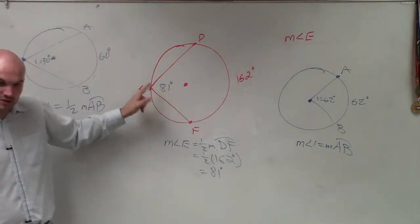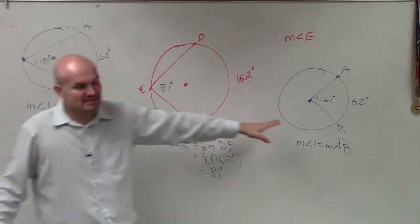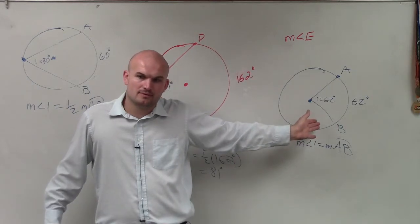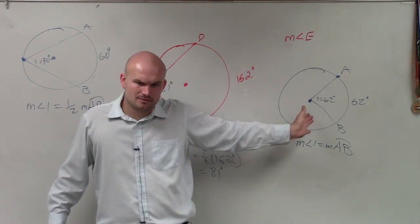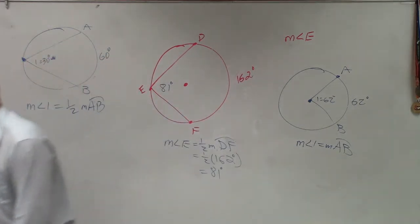Remember, when you have an inscribed angle, the angle measurement is half of the arc. When it's a central angle, it's exactly the same. An inscribed angle is when the vertex is on the circle. Inscribed angle is half the arc measurement, central angle is exactly the same.